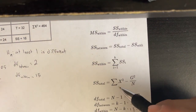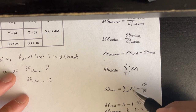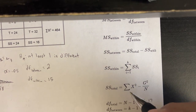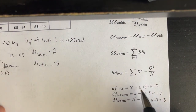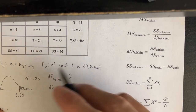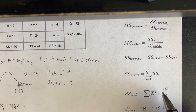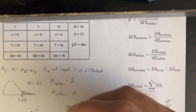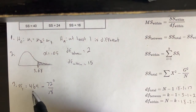The next thing is to calculate the sum of squares total. We don't have raw data, but we have the given values. SS total equals the sum of X-squared minus G-squared over N. The sum of X-squared given to us is 464, G is 72, and N is 18. So the formula is: 464 minus 72² divided by 18.